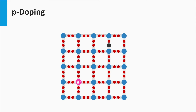This is called p-doping. These states are called acceptors as it accepts one electron from the valence band. For p-doped semiconductors the electrons are called the minority charge carriers, as the density of electrons is much smaller than the density of the holes.